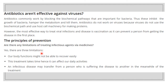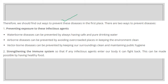So there are some limitations in the principle of treatment: our body functions might not recover easily, treatment takes a lot of time and affects our daily activities, and an infectious disease may transfer from one person to another during treatment. Therefore, we should find ways to prevent diseases in the first place. For waterborne disease: safe and pure drinking water. For airborne disease: avoid overcrowded areas. We also have to strengthen our immune system.